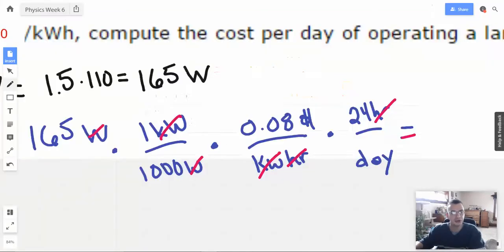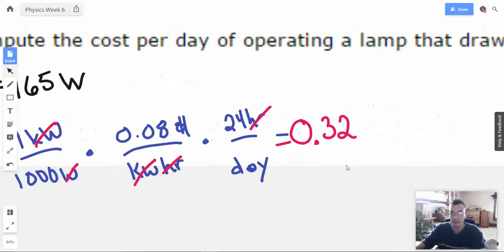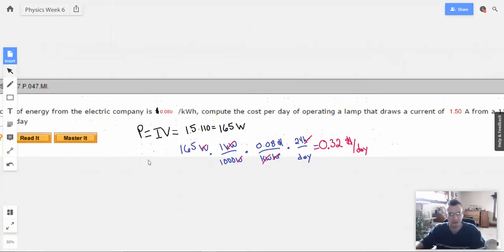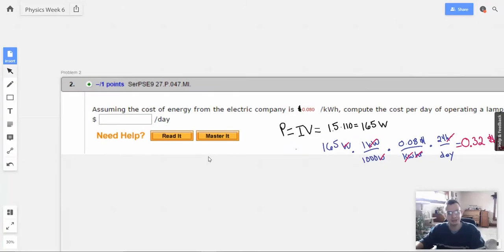0.3168. I'm going to call that 0.32. We have 0.32. That's going to be in dollars per day. That's all I wanted. That's actually reasonably expensive.